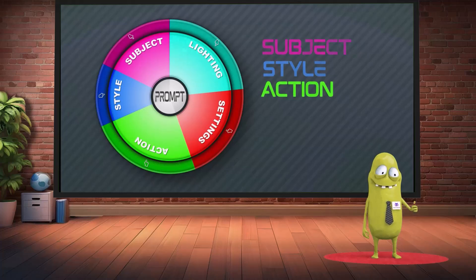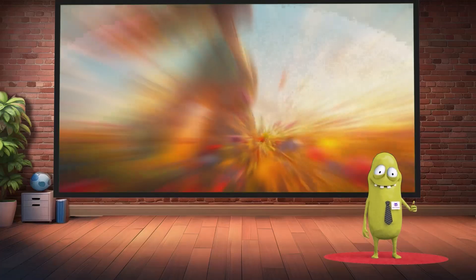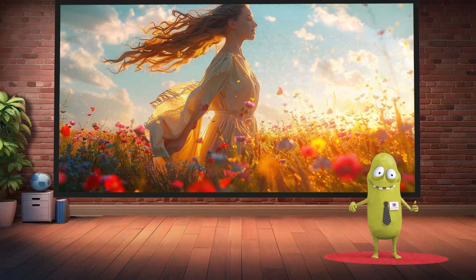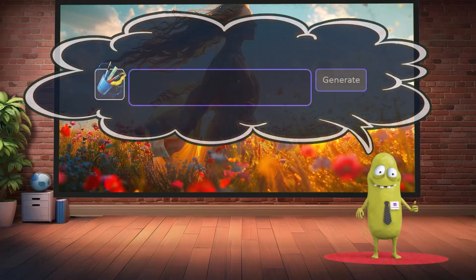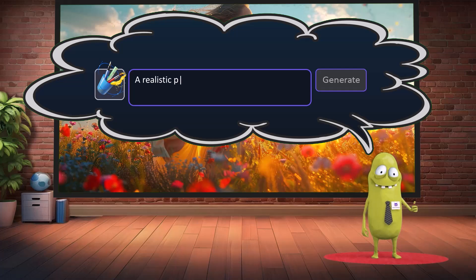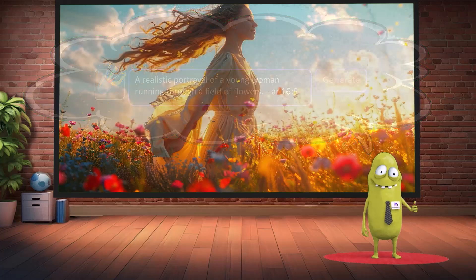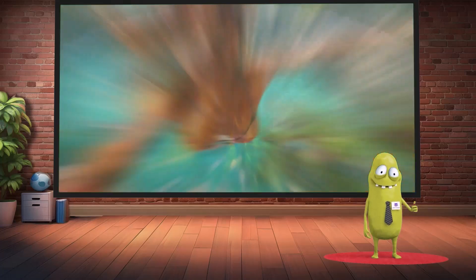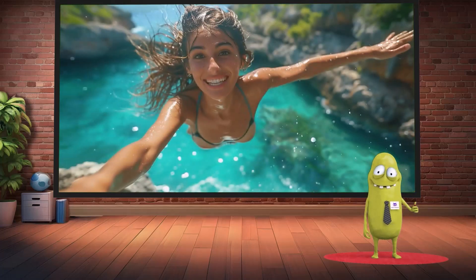Third: Action — describe any action happening in the image. For example: 'woman walking through a field of flowers' or 'woman jumping into water.' Adding action brings your image to life.